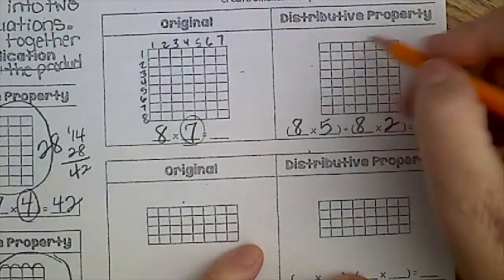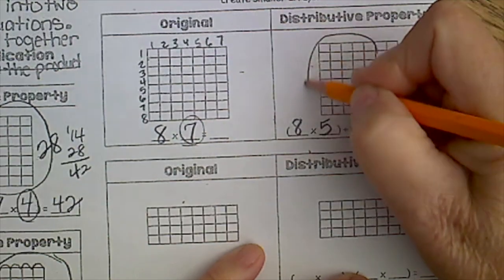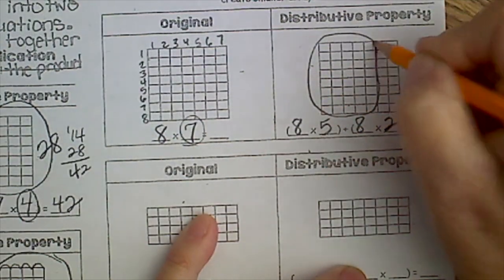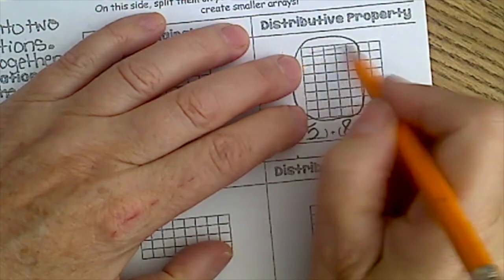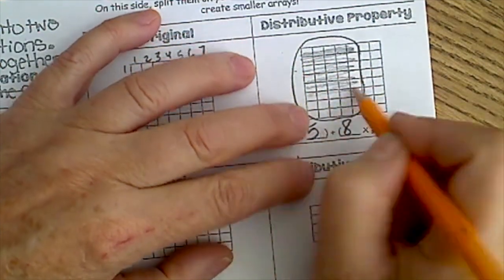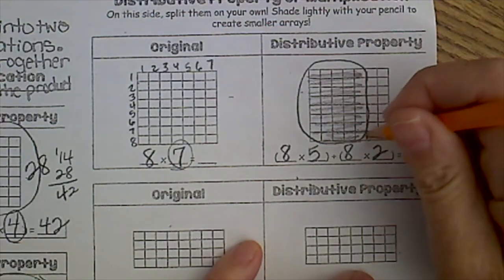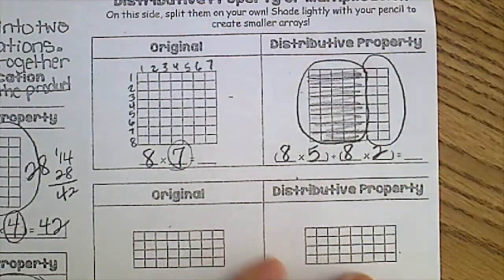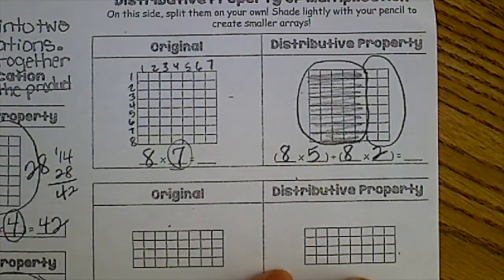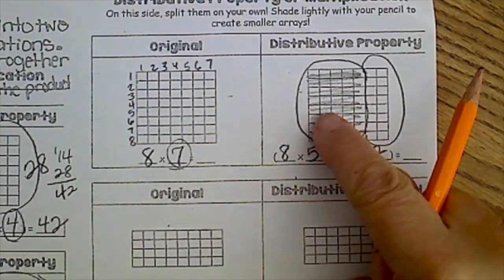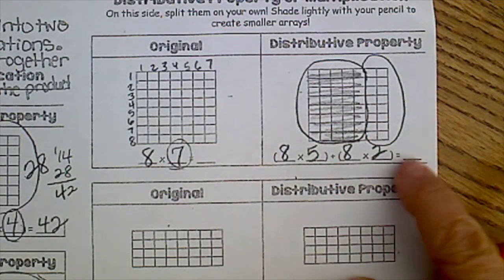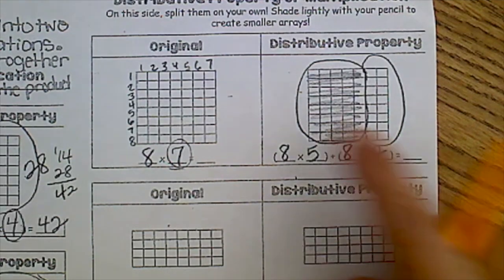Eight times five would be this right here, and I'm going to shade that in lightly. And then eight times two would be this over here. Now your job is going to be to figure out, well, what is eight times five and what is eight times two, and then add those together to get the answer and write that answer over here.